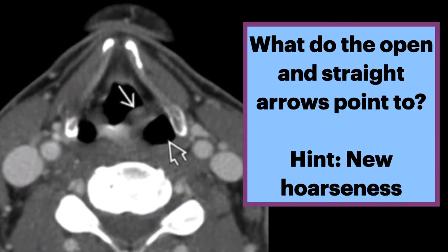At a slightly higher level in the same patient, we see asymmetric enlargement of the left piriform sinus, indicated by the open arrow. There is also medial positioning of a thickened left aryepiglottic fold, indicated by the straight arrow.